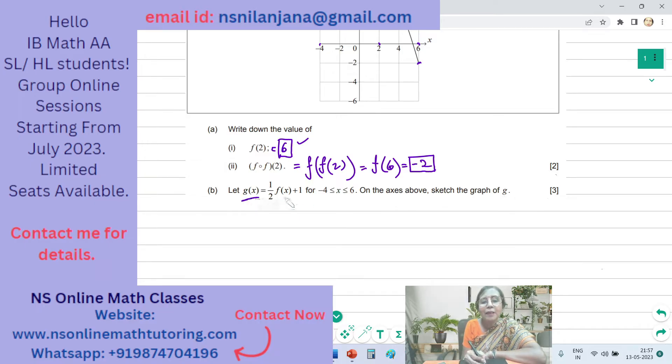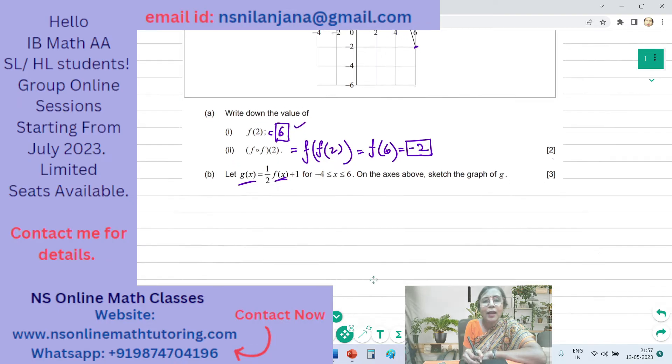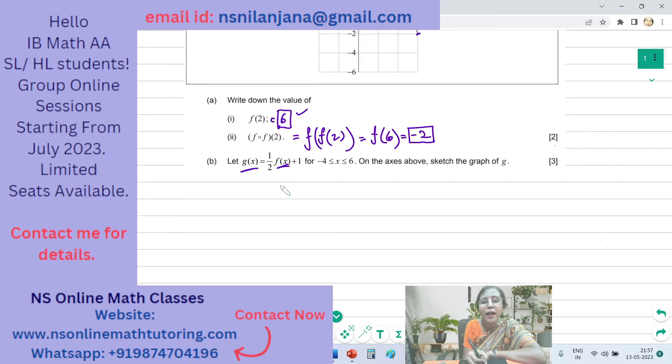So G of X is obtained from F of X by some transformations done on F of X. What are the transformations? We are having two transformations in fact. The first one is the vertical stretch with stretch factor half.